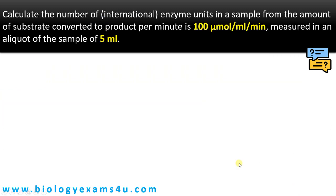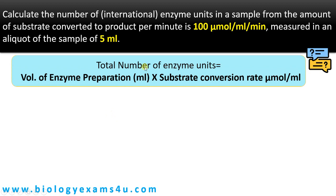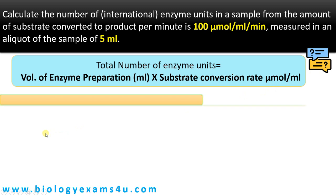Let's do one more question. Calculate the number of enzyme units in a sample where the amount of substrate converted to product per minute is 100 micromole per ml per minute, measured in an aliquot of the sample of 5 ml. The equation is: total number of enzyme units = volume of enzyme preparation (ml) × substrate conversion rate (micromole per ml).